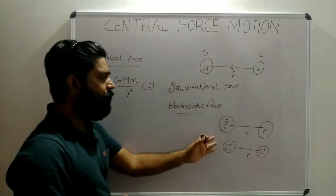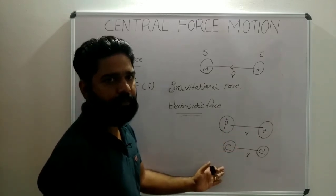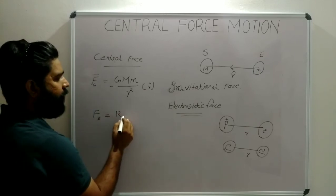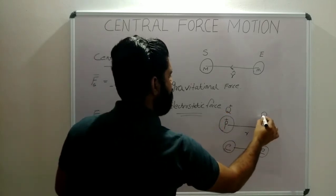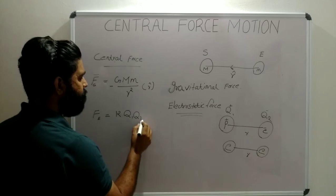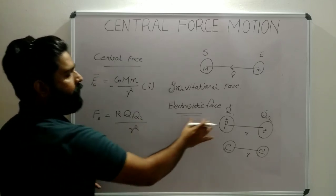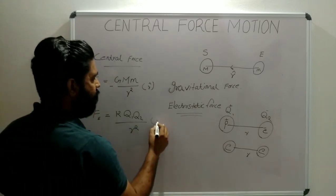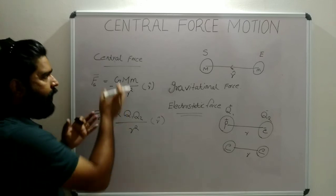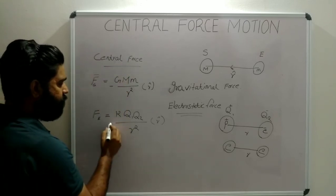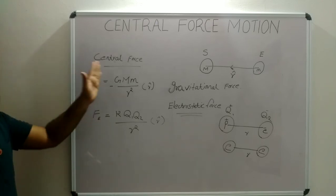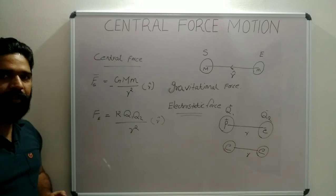In the case of gravitational force it is always attractive, so we add the negative sign. For electrostatic force, it may be negative or positive, attractive or repulsive. We can represent the electrostatic force as F = k·q1·q2 / r², following the inverse square law, with r-cap representing the direction. The sign may be positive or negative depending on whether the force is attractive or repulsive. This is the concept of central force.